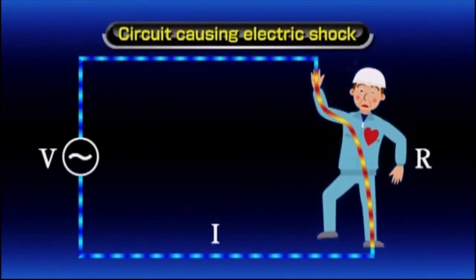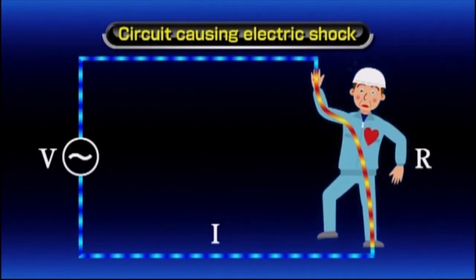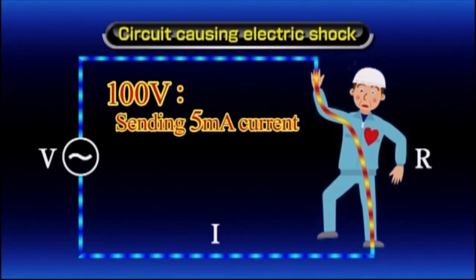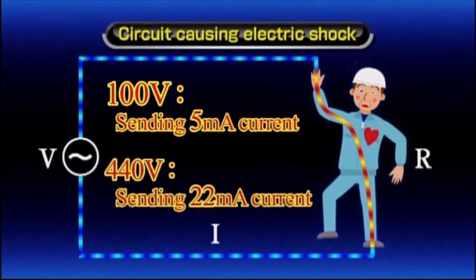The resistance of internal tissues remains almost unchanged — approximately 500 ohms for the area of the body between the hands and legs. Assuming dry skin offers a resistance of 20 kilo ohms, contact with 100 volts sends 5 milliamps through your body. Increase this to 440 volts and the current rises to 22 milliamps.